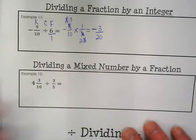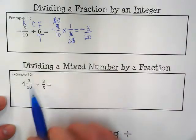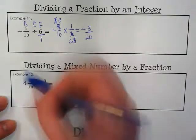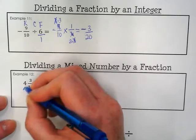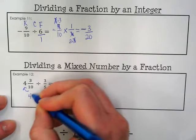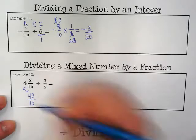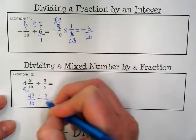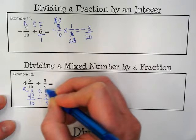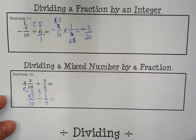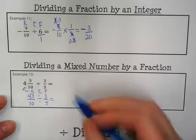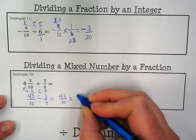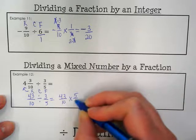And finally, if we're dividing a mixed number by a fraction, we have to convert this to an improper fraction first. If you remember, 10 times 4 is 40 plus 3. We would get 43 over 10. Rewrite it as is. And then we're going to do Keep, Change, Flip. And I'm going to rewrite this as 43 over 10 times 5 over 3.